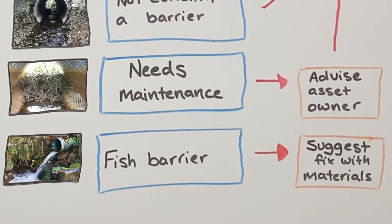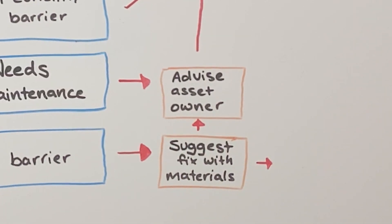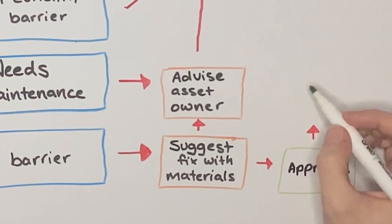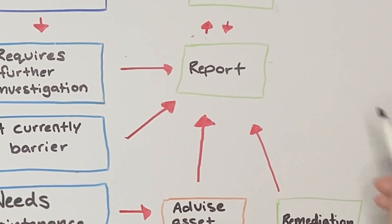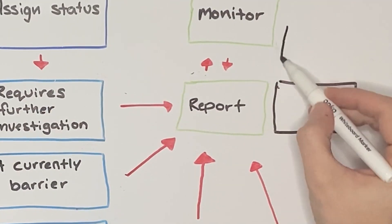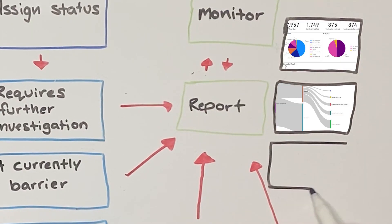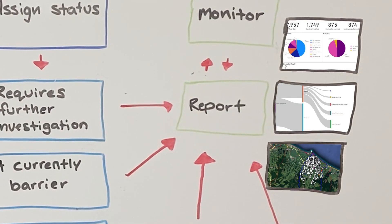Crews head out and fix five to ten structures per day. Client pre-approval of fixes is an optional step. Reporting: managers and funders may require detailed reports to see progress or where their money has been spent. Outputs from the process data include graphs and maps.